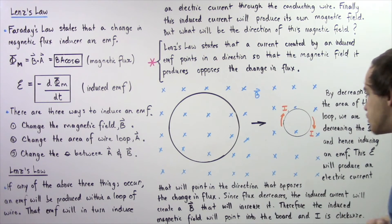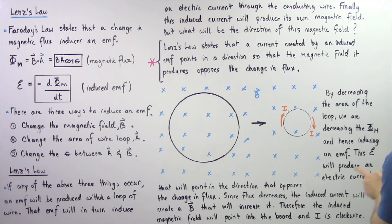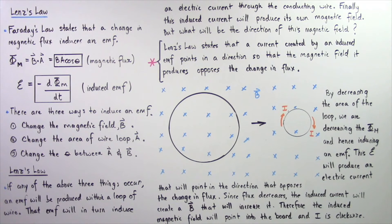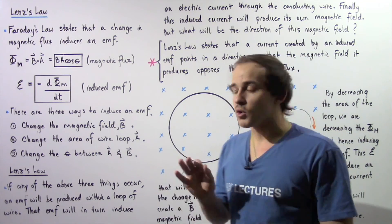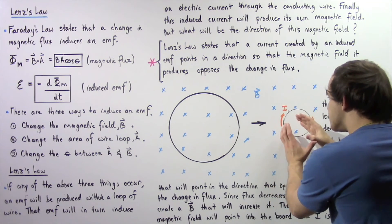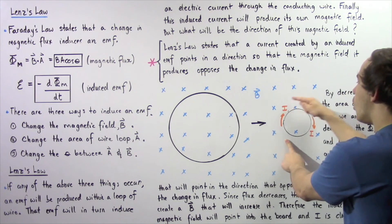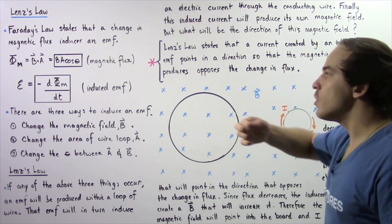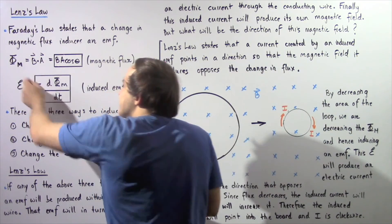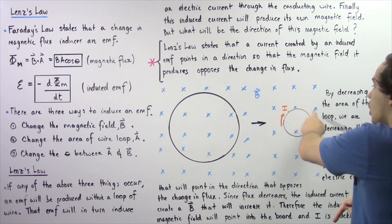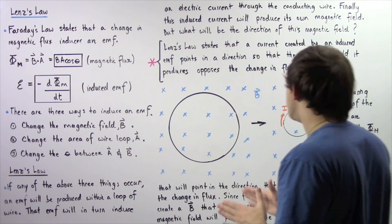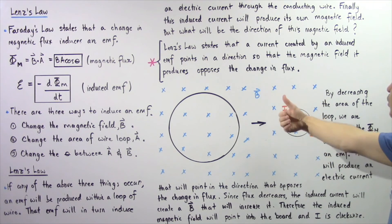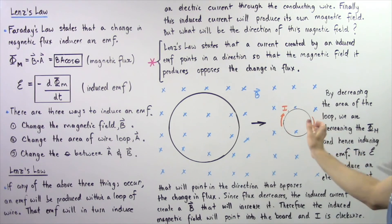Since the flux decreases, the induced electric current will create a magnetic field B that will increase it. Therefore, the induced magnetic field will point into the board and the current I is clockwise. We apply right-hand rule number one: because our magnetic flux decreases, our induced electric current points in the direction so that our new magnetic field points in the same direction as the old magnetic field, increasing our net flux. We take the right hand, wrap it in the direction of our magnetic field — into the board — and that implies our electric current points in the clockwise direction.